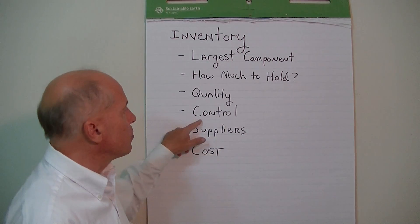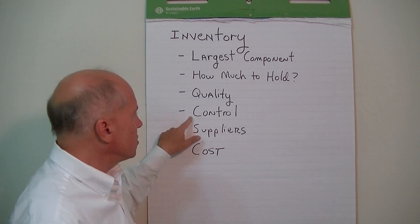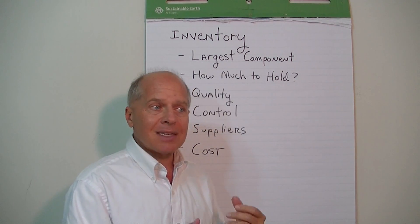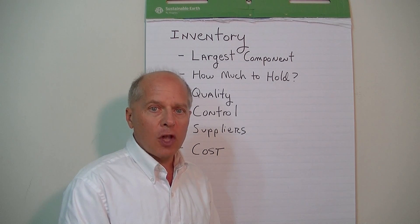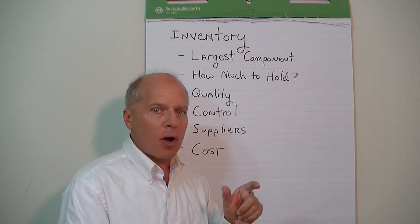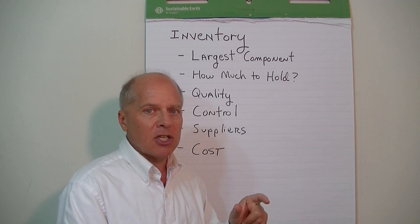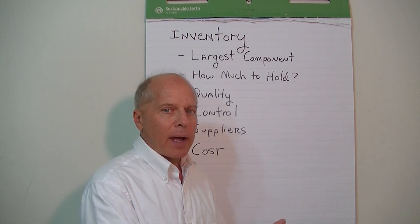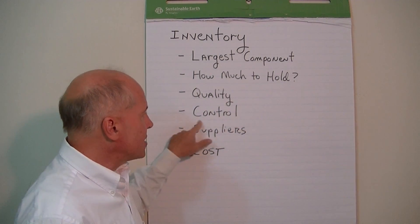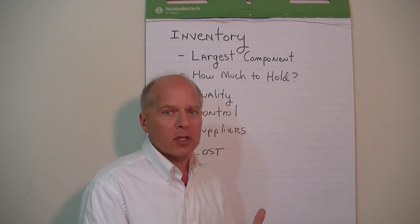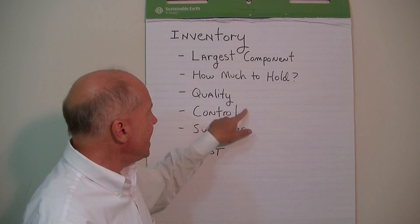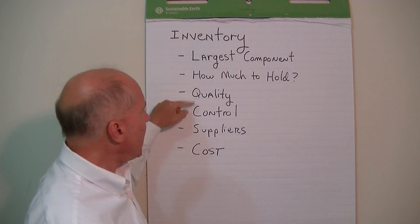One of the biggest practices is that you really should have some type of automated system to track the flow and movement of every single item that you sell. Every item has to have a product ID code or some type of identification that gets tagged, swiped, and updated into some type of perpetual inventory system or automated record system, so that we can run reports and control and monitor the flow of inventory.